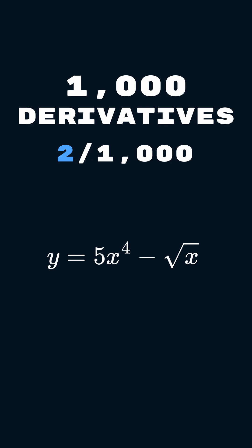Alright, this is day two of doing 1,000 derivatives, one every single day, and today's problem is y equals 5x to the power of 4 minus the square root of x.